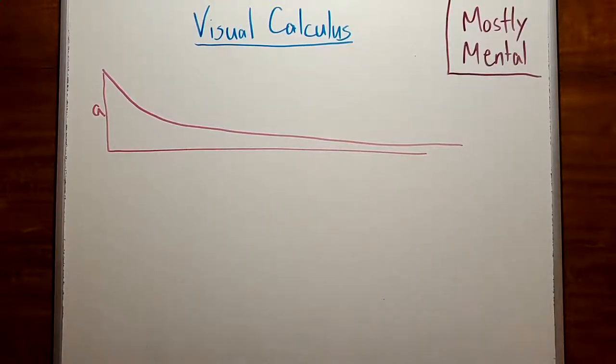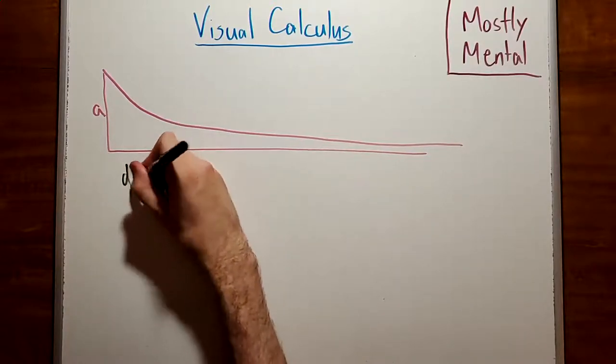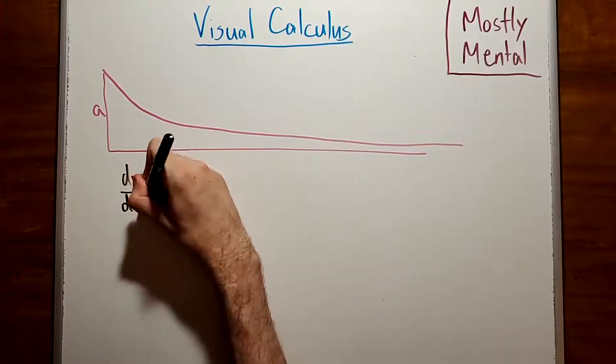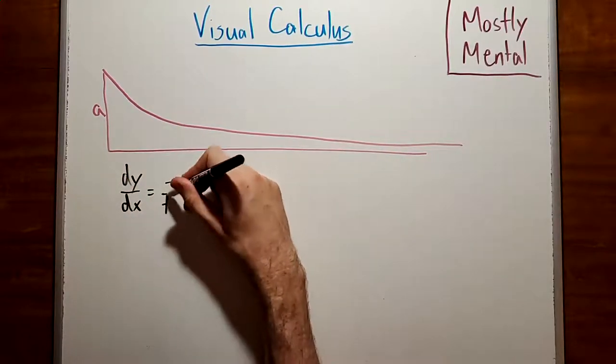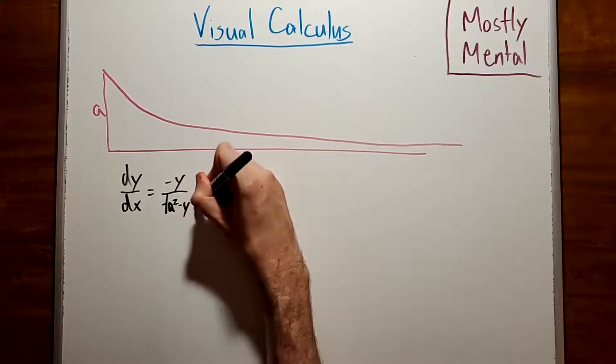If we wanted to solve this with traditional calculus, it would be a huge pain. First, we'd need to set up a differential equation. In this case, we get dy/dx is negative y over the square root of a squared minus y squared.